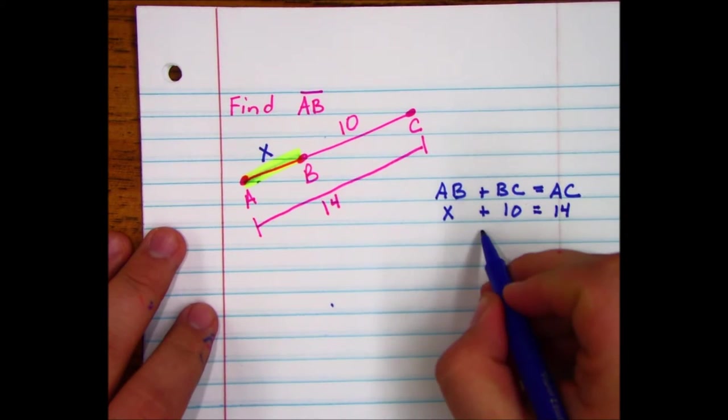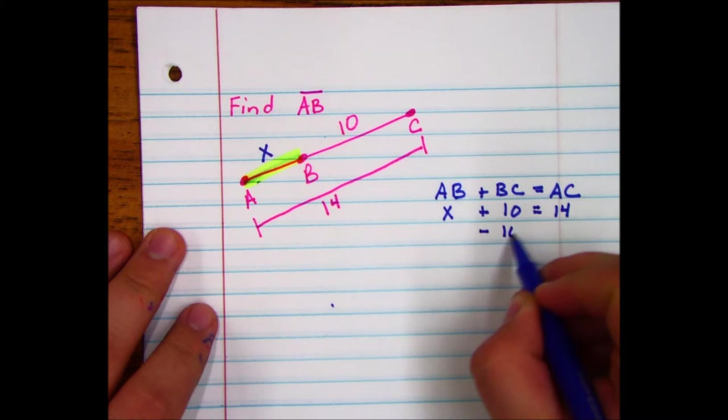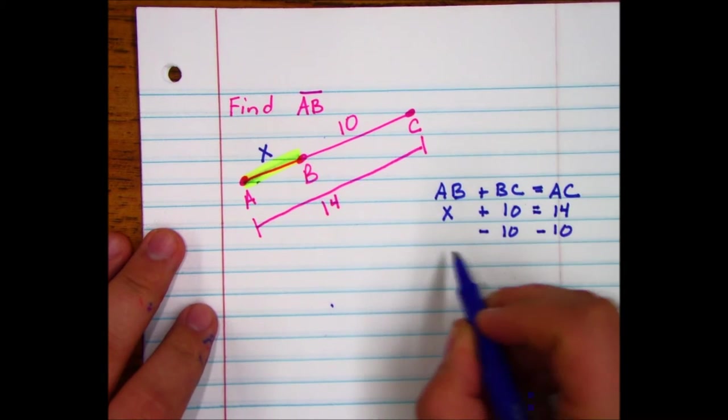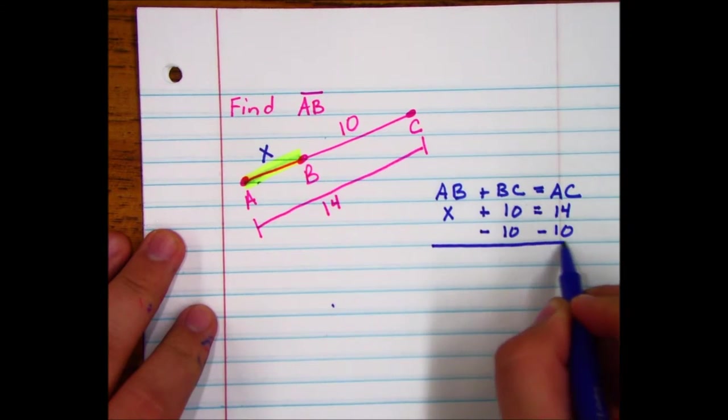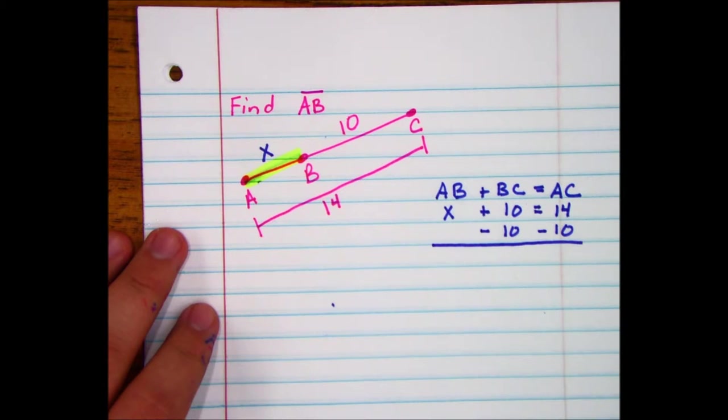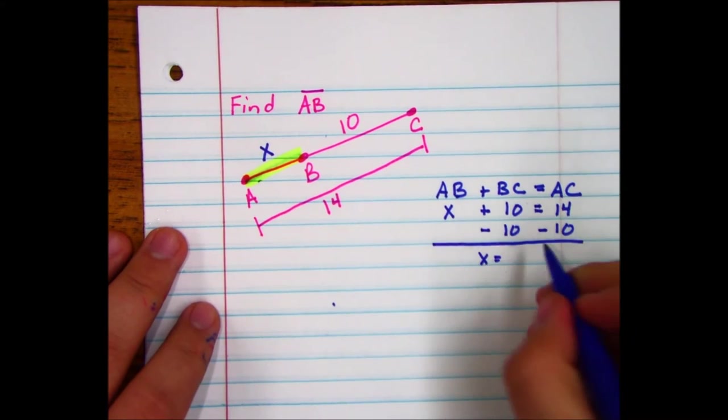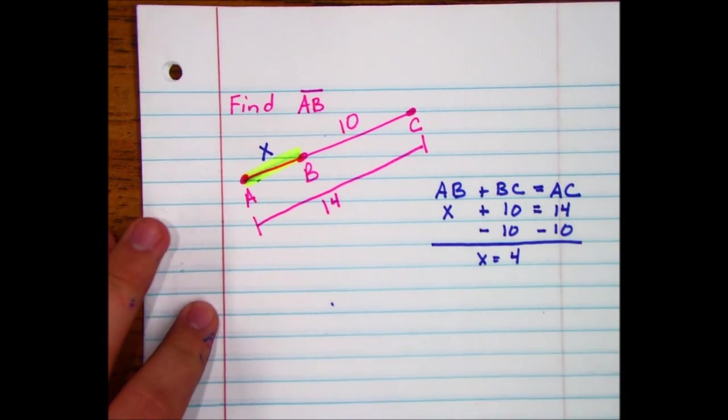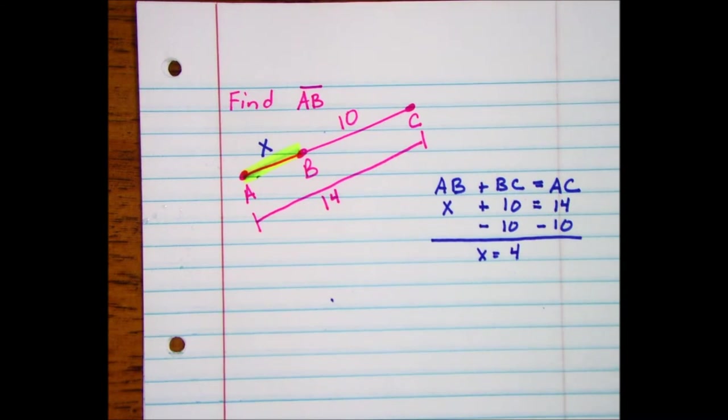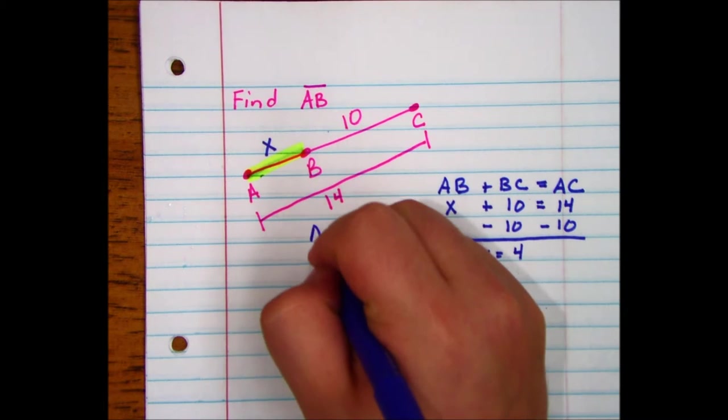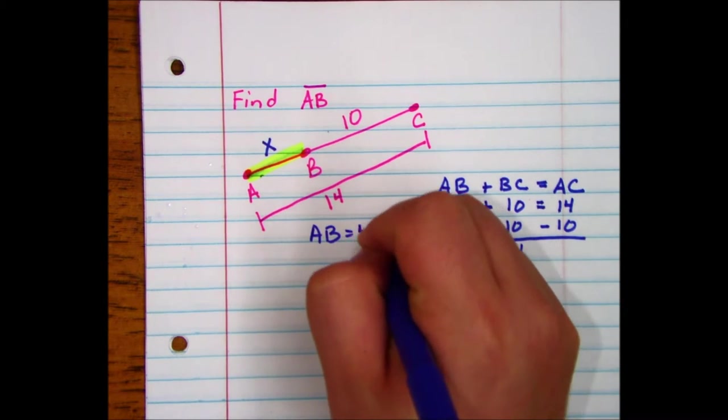And now we just simply solve for x. We'll subtract 10 from both sides. And x is equal to 14 minus 10, which is just 4. So AB is equal to 4.